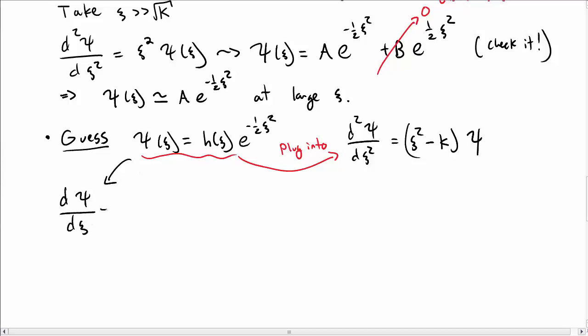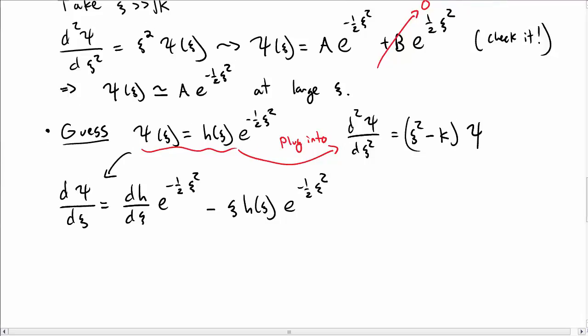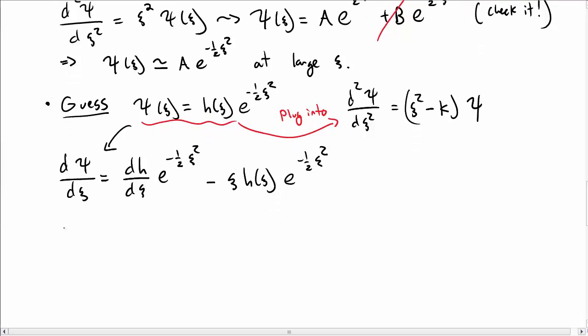Okay, so we need to take derivatives of this. The first derivative with respect to ξ gives me a derivative with respect to H, and there's a term where the derivative hits the exponent and brings down a ξ. The Schrödinger's equation has a second derivative of ψ with respect to ξ, and so I have to take another derivative, and so this gets kind of messy really quickly.